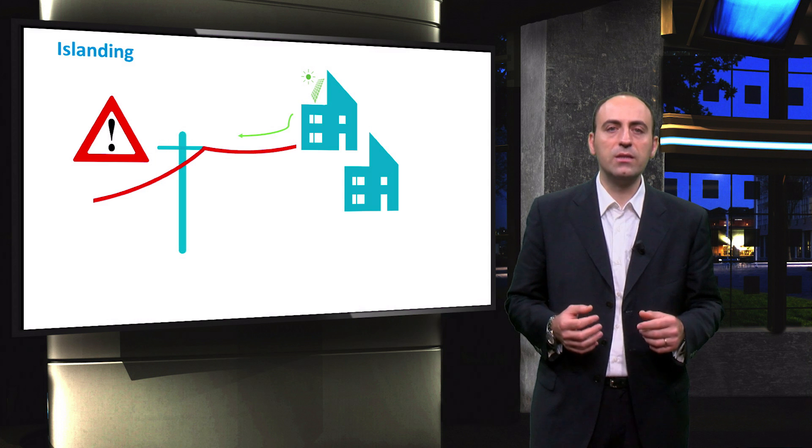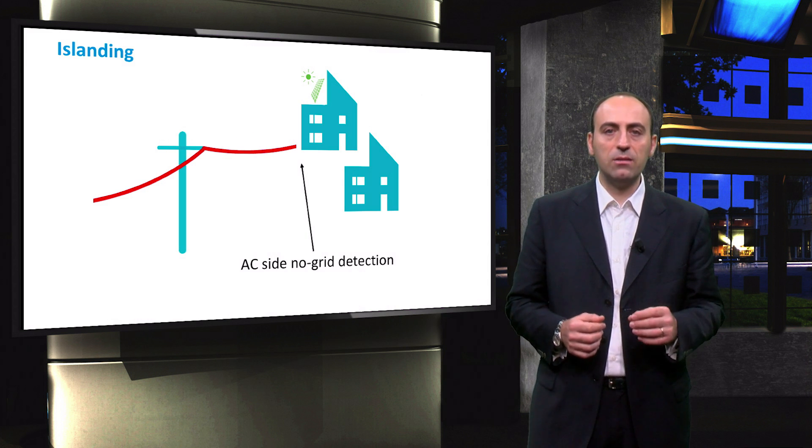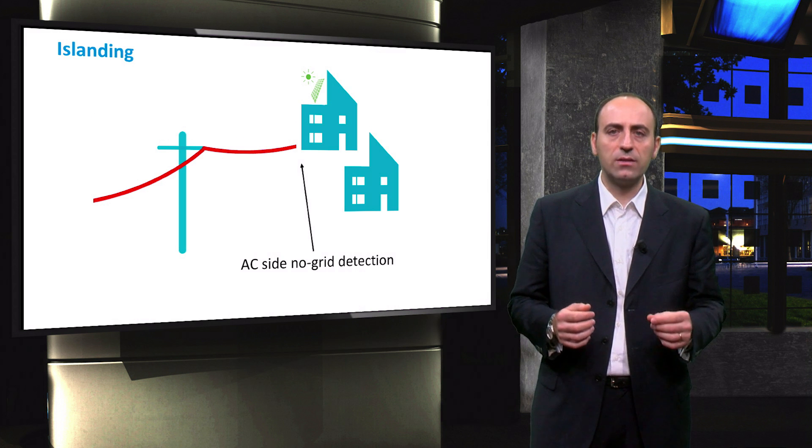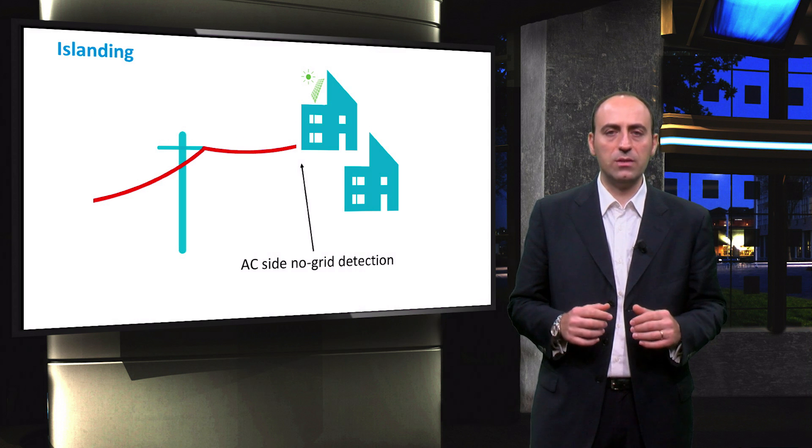In order to avoid this, an islanded or no grid condition must be detected by the solar inverter. This condition is checked at the AC side and the inverter shuts completely off the PV system.